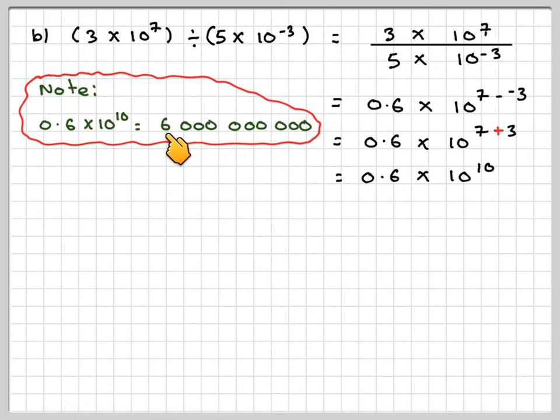However, if we move the decimal point 1 place that way, this number will become 6, and we have to reduce the power by 1. So the final answer is 6 times 10 to the 9.